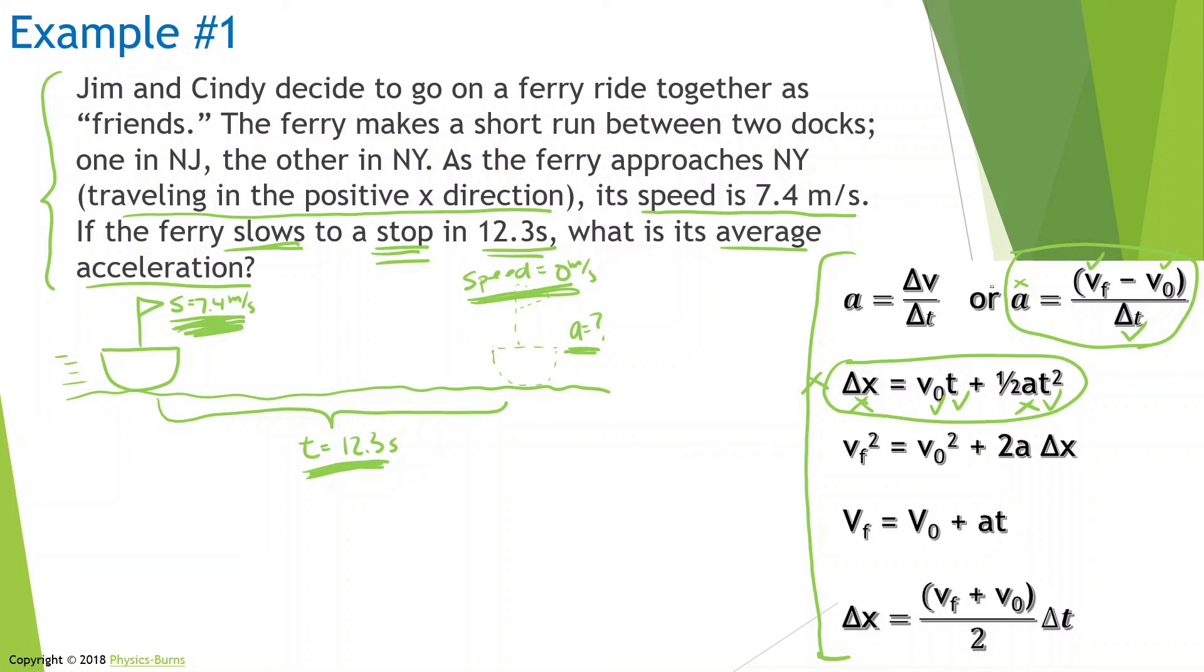So now perfect. This one has one missing variable that we don't know, and that's the one we're looking for. And now we have everything else. The other formulas won't work. So we're going to put that in. We have acceleration equals velocity final minus velocity initial divided by time.